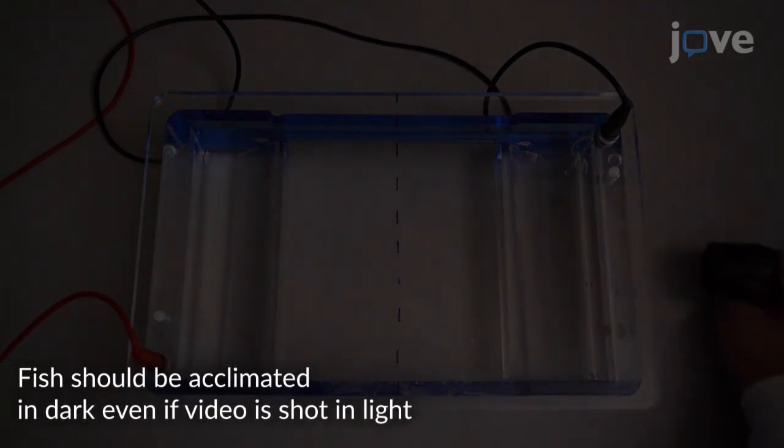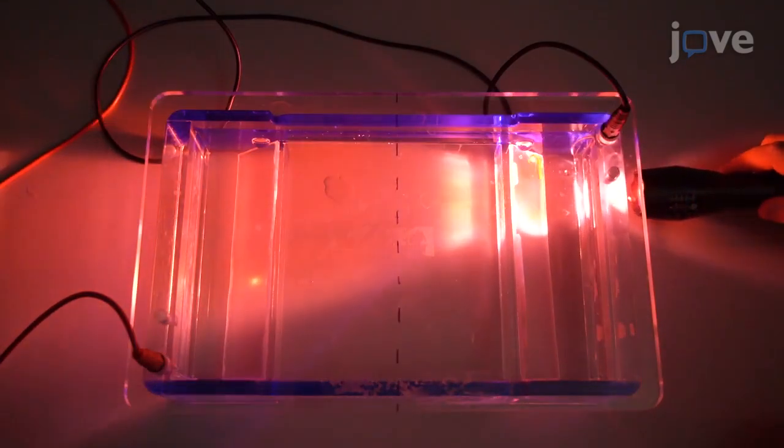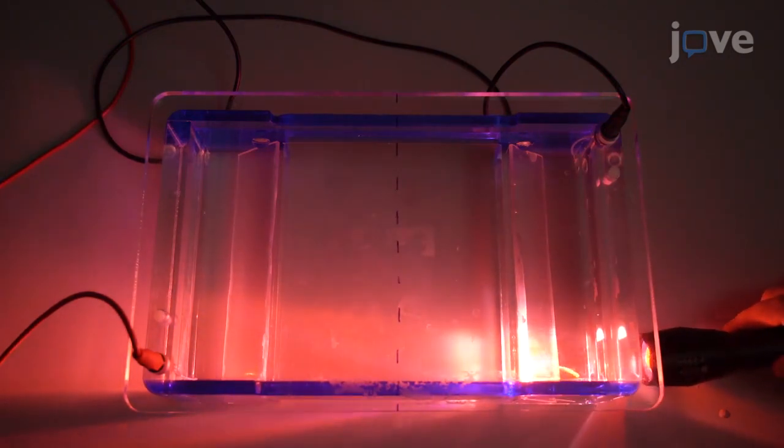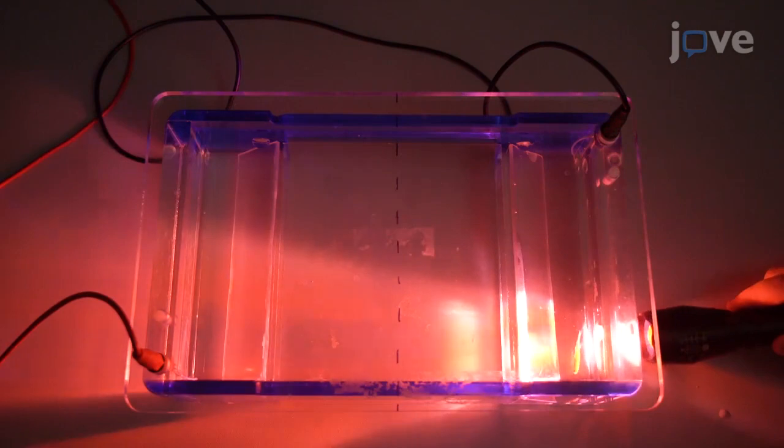After successful acclimation of the fish, manually shine an 800 lumen red lens flashlight approximately 2 cm from the gel box wall on the side occupied by the fish.